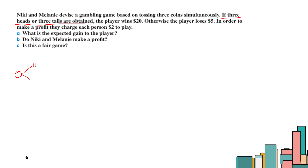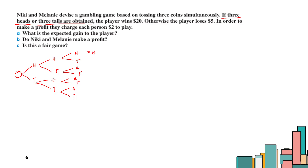Listing all outcomes when tossing three coins: HHH, HHT, HTH, HTT, THH, THT, TTH, TTT. So zero heads (TTT) has probability 1/8, one head has probability 3/8, two heads has probability 3/8, and three heads (HHH) has probability 1/8.